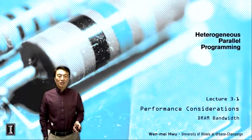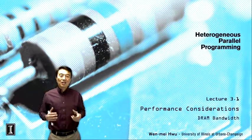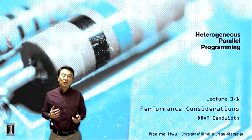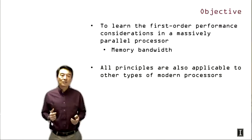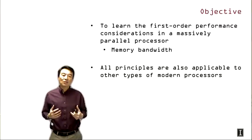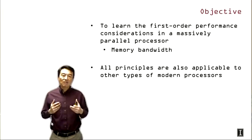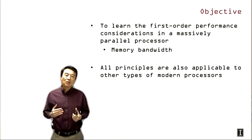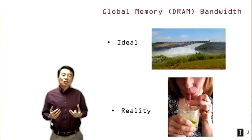Hello everyone, welcome back to the heterogeneous parallel programming class. We're starting week three, lecture 3.1 on performance considerations. We're going to be looking at DRAM bandwidth in this lecture. The objective is to help you learn the first-order performance considerations in a massively parallel processor, namely memory bandwidth. We'll go over fundamentals of DRAM design in modern computers, and all the principles discussed will also be applicable to other types of modern processors.